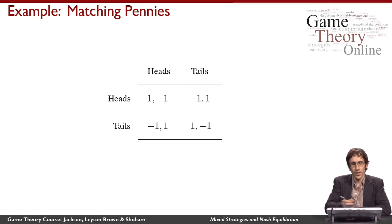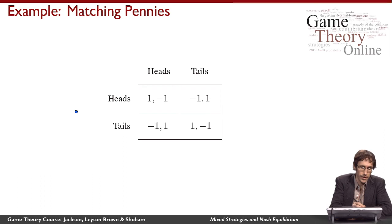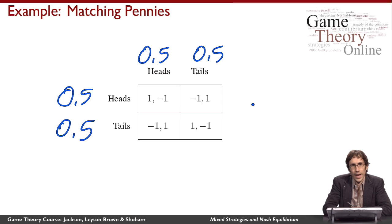Let's do some examples. We argued at the beginning of this video that matching pennies doesn't have a pure strategy Nash equilibrium. But it does have a mixed strategy Nash equilibrium: both players randomize 50-50. That doesn't mean it always has to be 50-50 — that happens to be the Nash equilibrium here because of the symmetry of the payoffs.